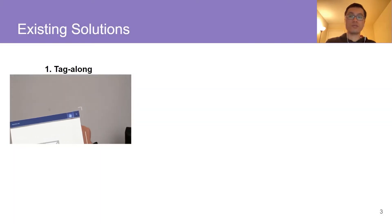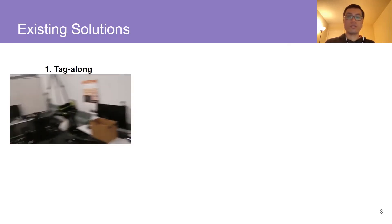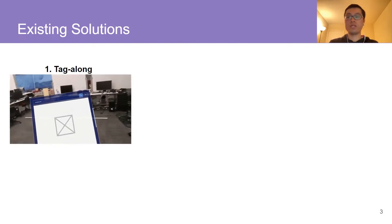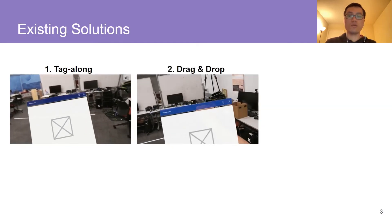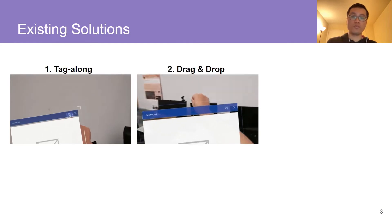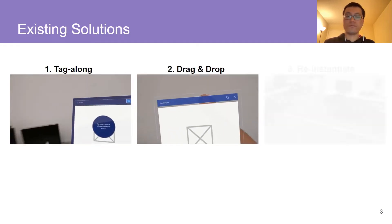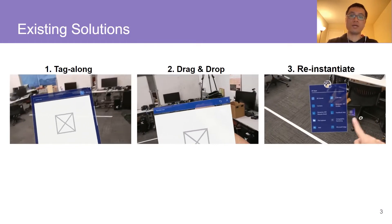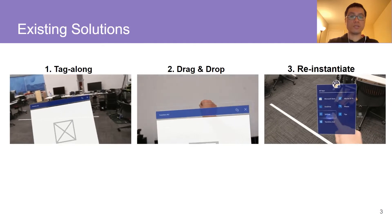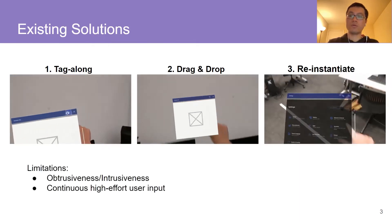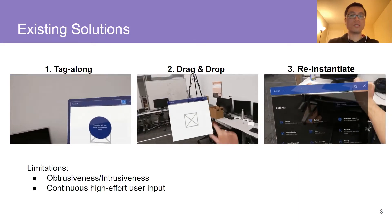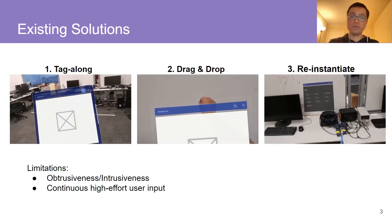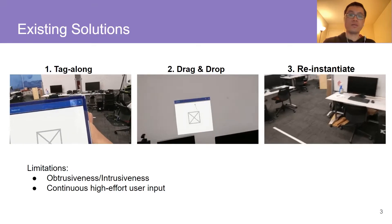There are three common solutions to transition AR UI applications. Tagalong, in which virtual content loosely stays in the user's field of view and follows them around. Drag and drop, in which users manually grab and move the virtual content to a new location. And reinstantiate, in which users reopen and place the target app at a new space via a menu. There are obvious limitations to these methods — the AR content would become intrusive and obtrusive while following the user around, or consume continuous input and attention from the user during manual interactions.